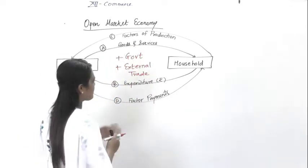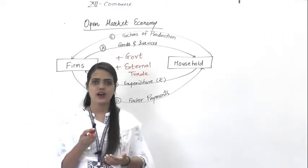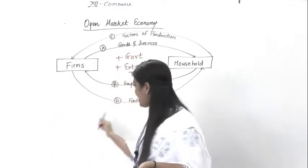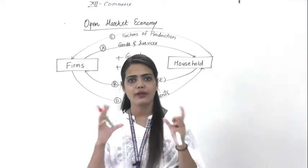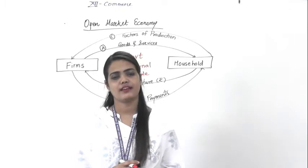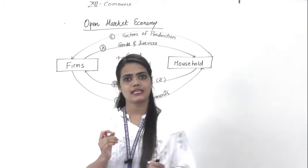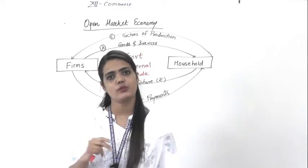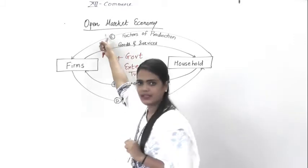When you say there is a circular flow, the exact money that firms earn by selling goods and services is equal to the remuneration or factor payments they make to households. But when you talk about open market, your economy is open for all kinds of transactions like import, export, FDI, FII. All international monetary transactions that take place are taking place in the open market economy.